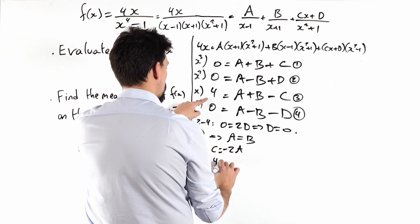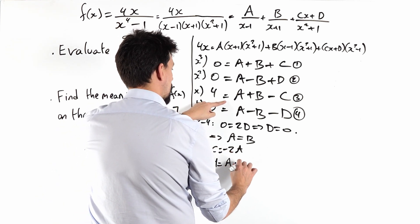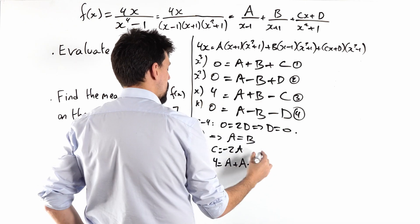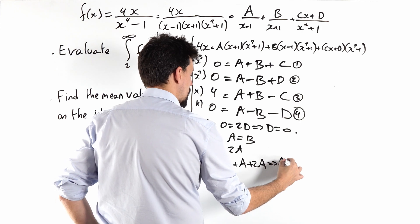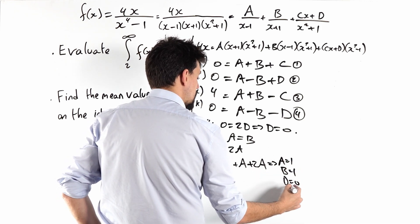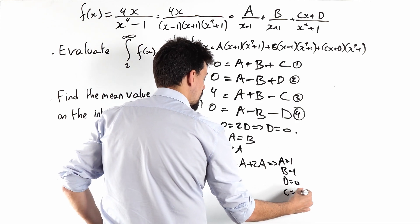So 4 is a plus a minus c, so plus 2a. So that tells me a is 1, tells me b is 1, tells me d is nothing, and tells me c is minus 2.